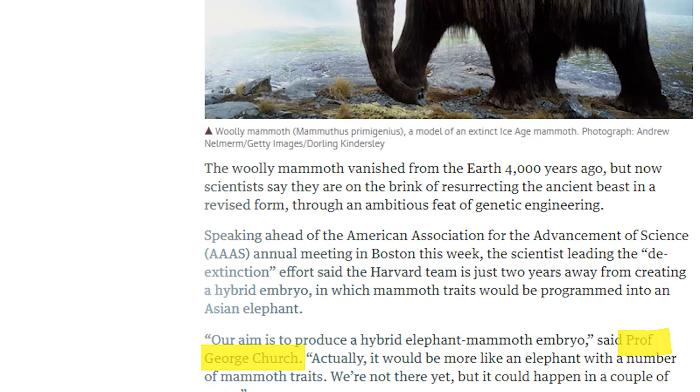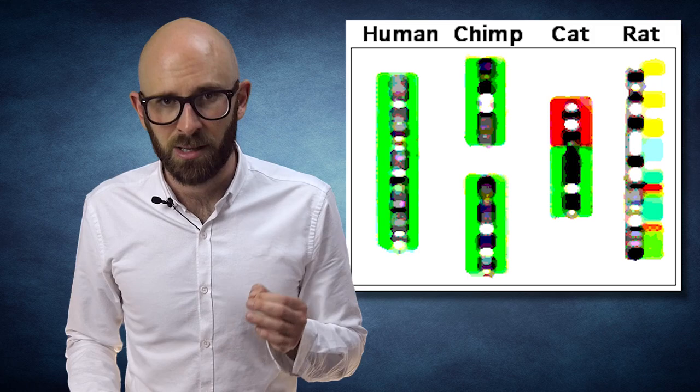The woolly mammoth's closest living relative is the Asian rather than the African elephant. They set off on different branches of their family tree as much as six million years ago, but it's recently been discovered that their genomes are far more similar than anybody had expected. On a genetic level, the Asian elephant is 99.6% identical to a woolly mammoth. This makes them far more alike than humans are to chimpanzees, which are believed to share 96% of our DNA.